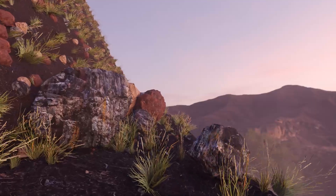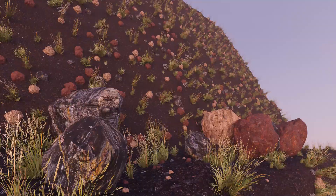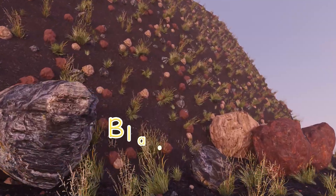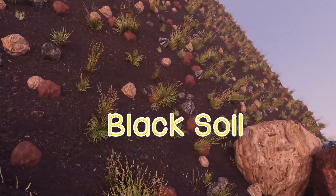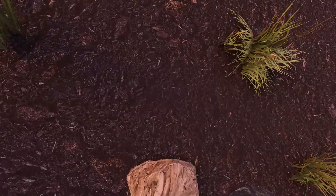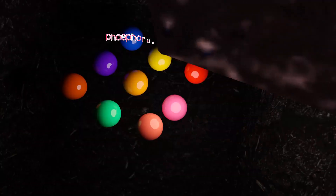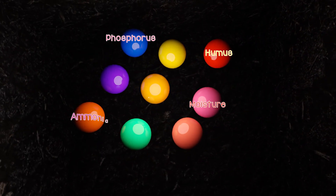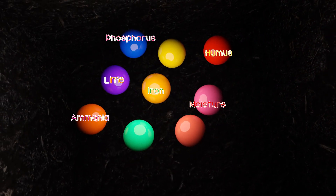Now let's go to the Deccan plateau. This is a black colour soil, so it is called black soil. It is rich in phosphorus, humus, moisture, ammonia, iron, lime, calcium, potash, and manganese. It looks cracked — it cracks in a hot environment.